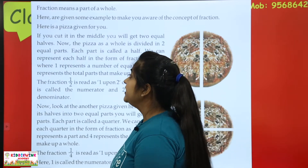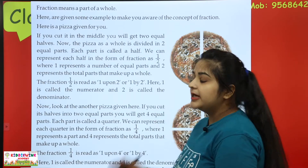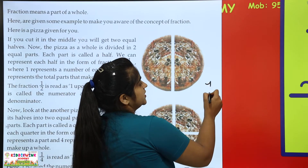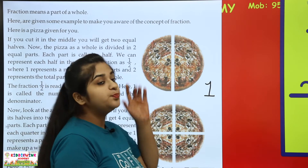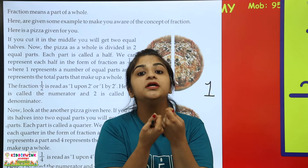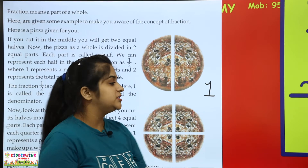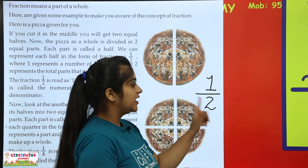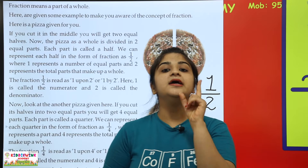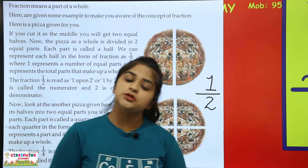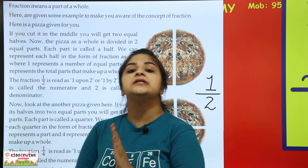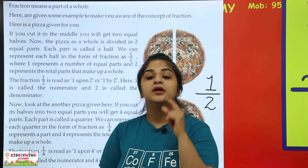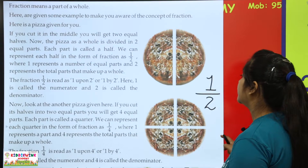Now this is half. We can represent each half in the form of a fraction. This is our whole pizza, so we denote it from one. Our pizza is divided into two parts, so whatever is the total, it always comes down — two is down. And how many parts are on one side? One part. So one comes up. So what does one upon two mean? Half. Suppose we say half kg apples — half kg means one by two.